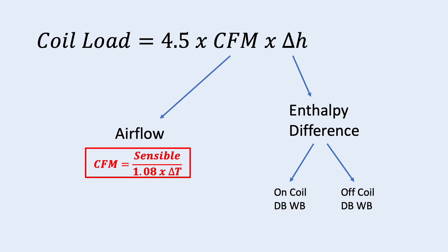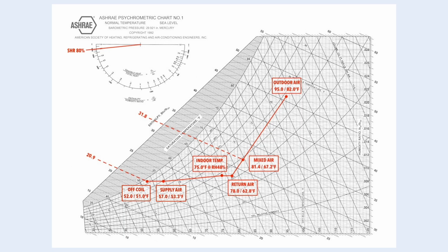For airflow, we use this formula. To determine the on-coil and off-coil conditions, we need to refer to the psychrometric chart. On the psychrometric chart, this is the on-coil and off-coil enthalpy. Their difference is the delta H.